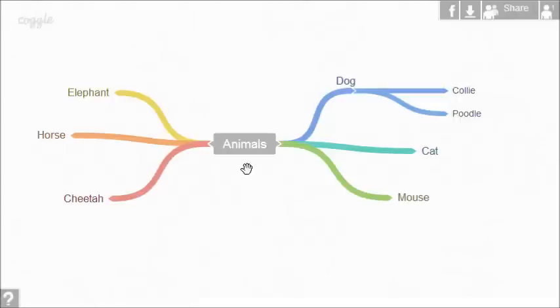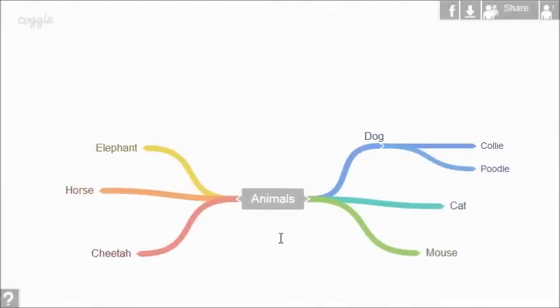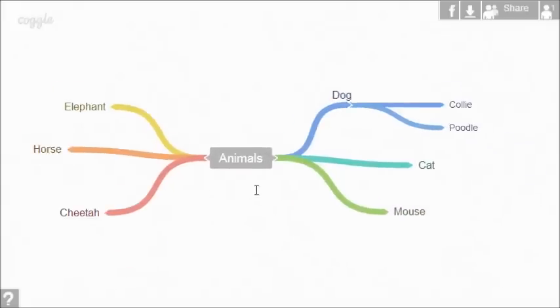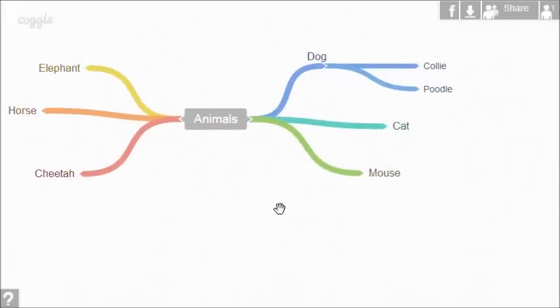Now, I'm going to add some more detail to my Coggle. You can move the whole Coggle by clicking and dragging the center, or the background. This helps when Coggles get big.